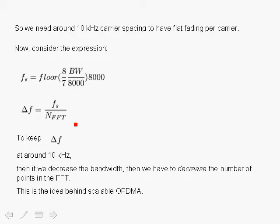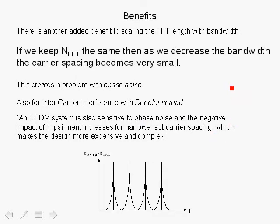This is the core idea in Scalable OFDMA: we scale the number of points in the FFT with the bandwidth. As we increase the bandwidth, we increase the number of FFT points. If we decrease the bandwidth, we decrease the number of FFT points, keeping the carrier spacing constant. We don't want to increase the carrier spacing, because that violates the flat fading requirement per carrier. And if you increase FFT points but keep bandwidth fixed, carrier spacing becomes too small, creating Doppler and phase noise issues.